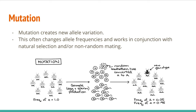Mutation is also a very easy assumption to violate because mutation just happens. Large populations will be insulated against this — it's not a big deal in a big population. One mutation in a gene pool of hundreds of thousands is not going to make much of an impact, but in a gene pool of a couple dozen, it does. What mutation does is introduce new variation, and that is actually a great thing because that's what allows natural selection to work. But this can change allele frequencies and does have a big impact even in large populations when it works in conjunction with natural selection or non-random mating.